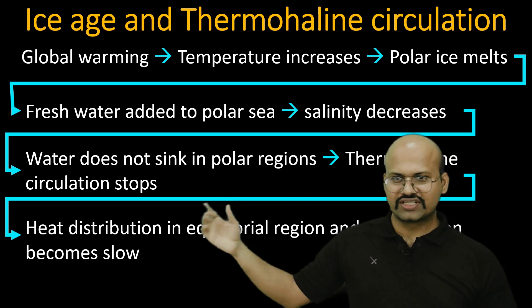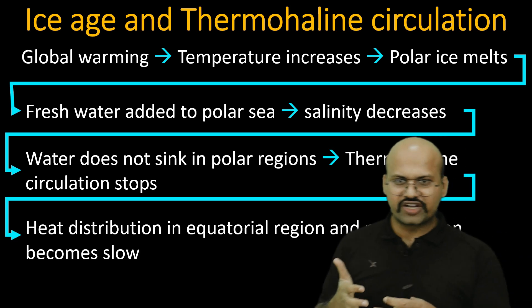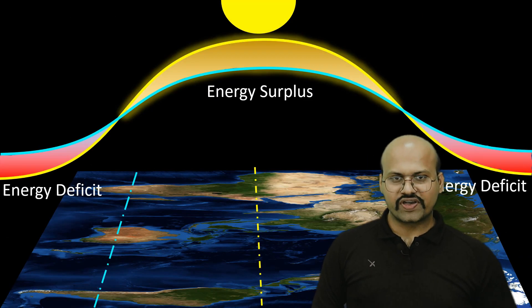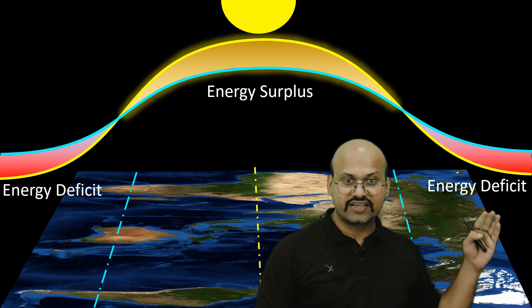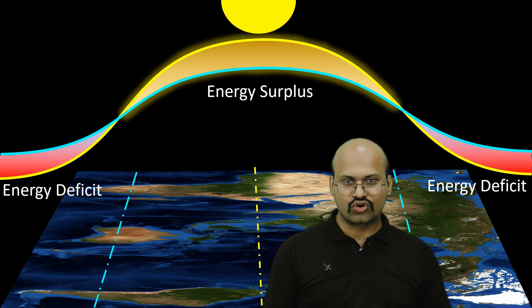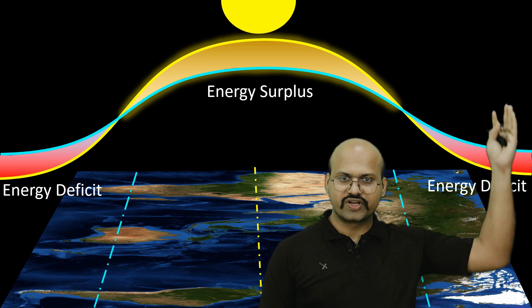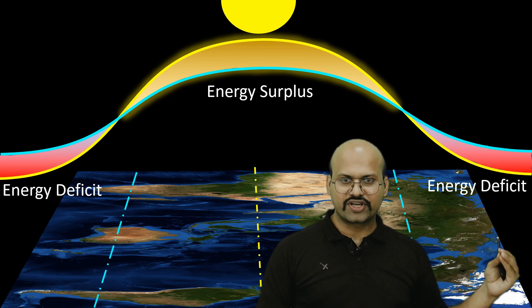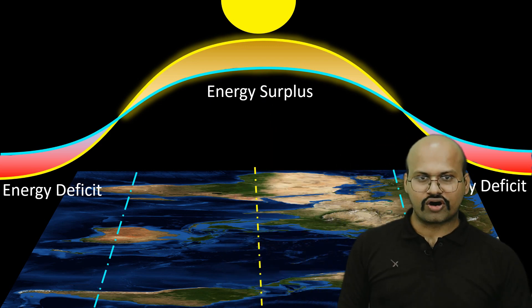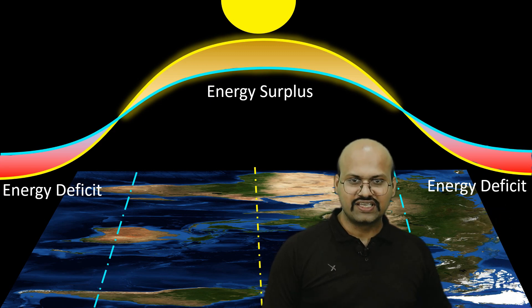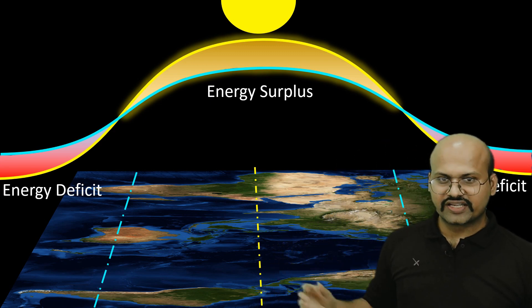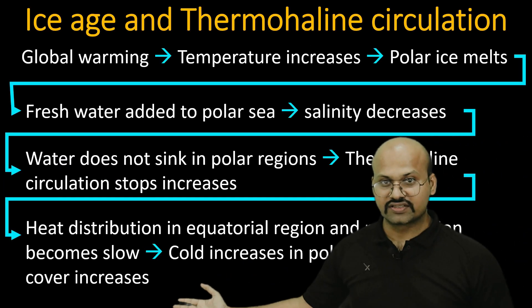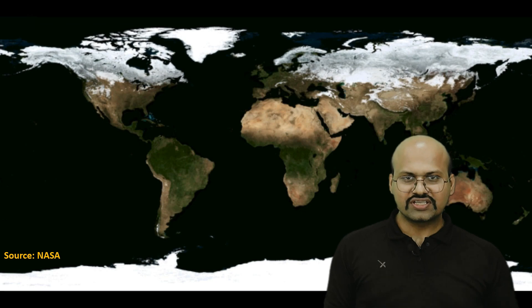Once thermohaline circulation stops, heat distribution from the equatorial region to the polar region becomes very slow. The polar regions, which already have an energy deficit, will radiate more energy than they receive and become colder and colder, while the equatorial region becomes hotter. As polar temperatures drop, ice cover increases and starts to expand southward. This is how stopping of thermohaline circulation could potentially lead to an ice age.